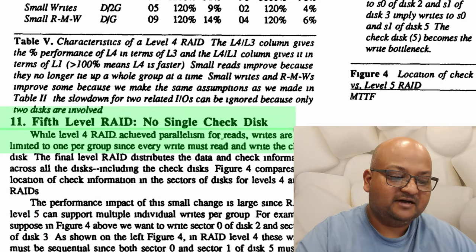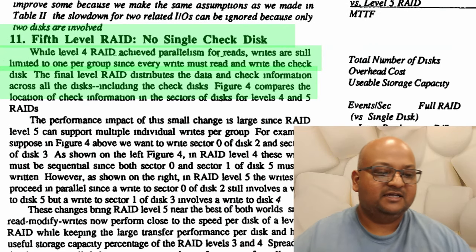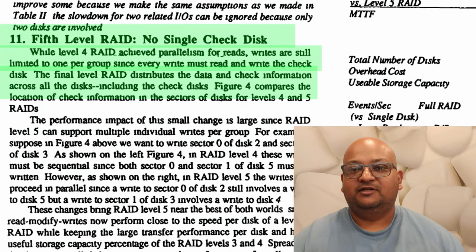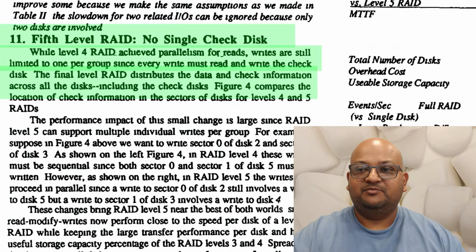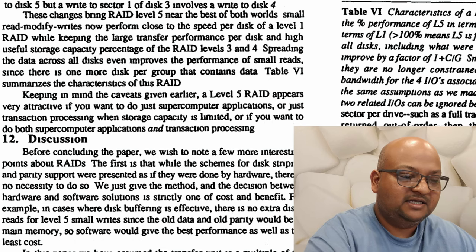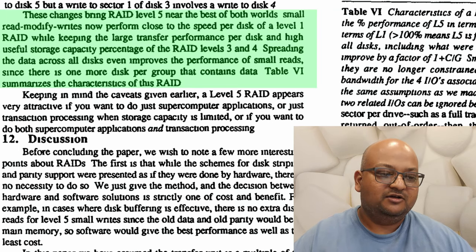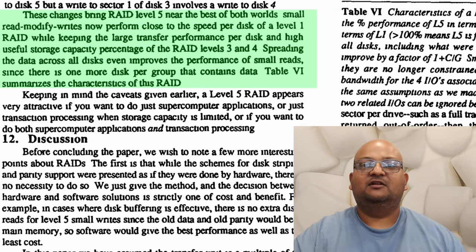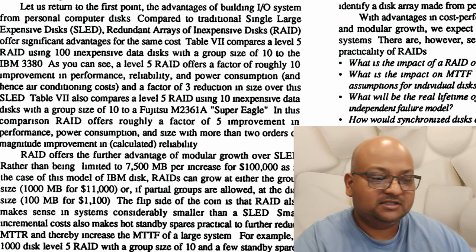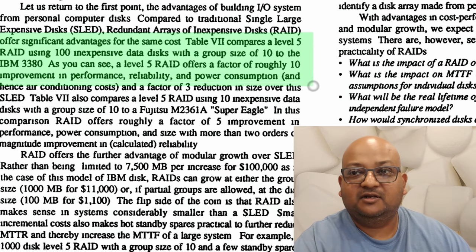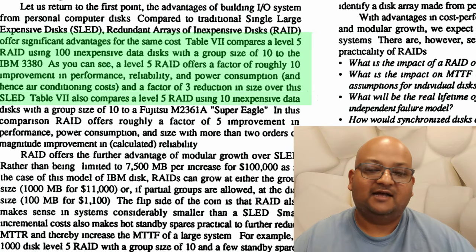This is what brings us to the final RAID level, RAID level 5, which does away with this last bottleneck as well. The way we do that is by distributing the data and check information across all the disks. In the previous scheme, you had a dedicated check disk, but in RAID level 5 you smear that check information across all the disks in your array. This brings you to pretty much the ideal performance characteristics — the best of both worlds where you can do a lot of random reads and writes as well as large sequential reads with good performance. When you look at the overall performance of RAID level 5 compared to a mainframe large single disk, the RAID array is about 10x better in terms of performance, reliability, as well as power consumption.